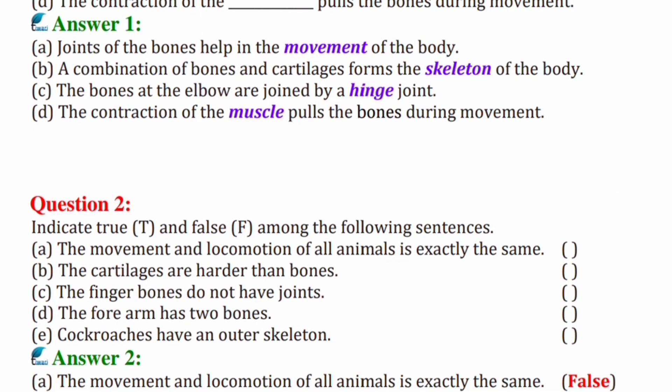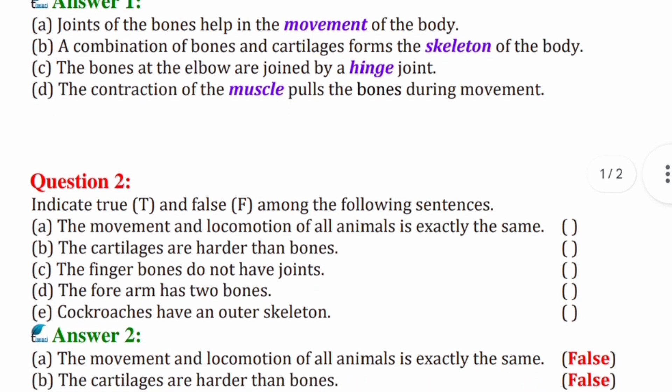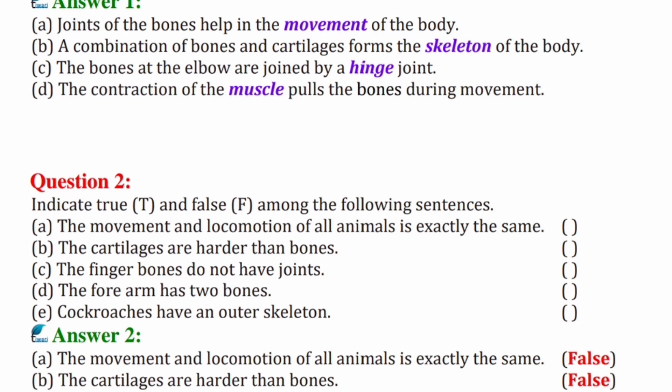Question (b): The cartilages are harder than the bones. No, the cartilages are softer than bones, so this statement b is also false. (c) The finger bones do not have joints. False again, because the finger bones have joints.